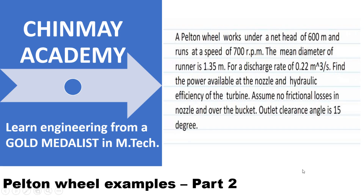Let us start with our next example on Pelton wheel. We have to find out the nozzle power — that is, power available at the nozzle — and hydraulic efficiency. Here we have to neglect the frictional losses in the nozzle and over the bucket. This means the coefficient of velocity Cv is equal to 1, and there are no losses over the buckets, meaning Vr1 is equal to Vr — that is, relative velocity at outlet equals relative velocity at inlet, or k equals 1.